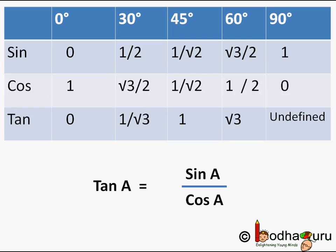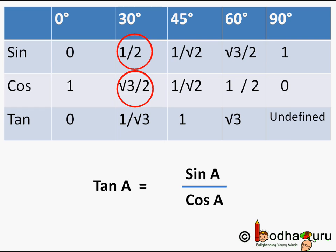Now let us calculate the tangent values. tan(a) = sin(a) / cos(a), so given the values of sin and cos for each angle we can find the tangent. tan(0°) = 0/1 = 0. tan(30°) = (1/2) / (√3/2) — the 2s cancel — giving 1/√3.